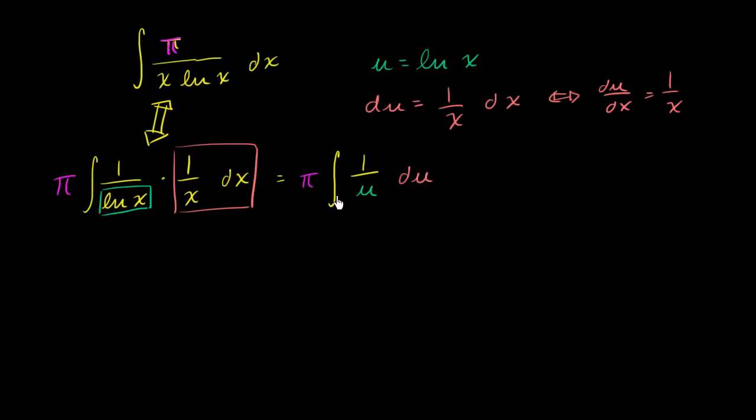What is the antiderivative of all of this business? This is going to be equal to π times the natural log of the absolute value of u, so that we can handle even negative values of u, plus c.